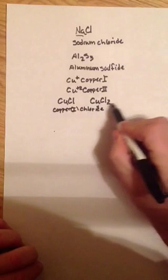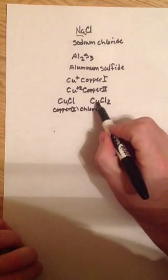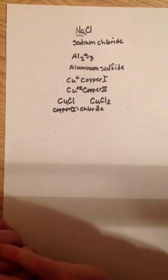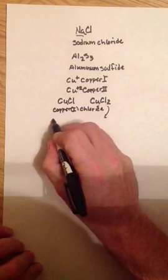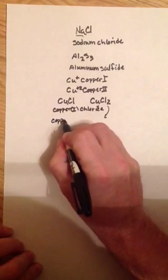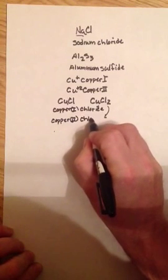This copper though, the chlorine is in a two to one ratio, so I must be using copper two in this compound. So the name of this compound would be copper two chloride.